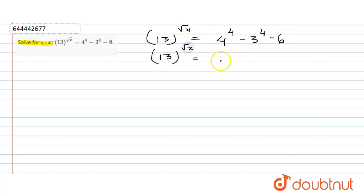The value of 4 raised to power 4 that is 16 into 16, that will be equal to 256, minus the value of 3 raised to power 4, that is 3 into 3, 9, 9 into 9, that is 81, minus 6. After simplification it will become...